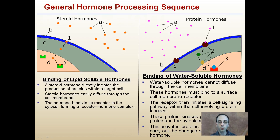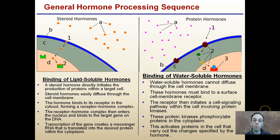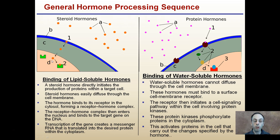Now we have some different examples of different types of hormones. Keep in mind there are two key categories. There are lipid-soluble hormones, or steroid hormones. The key part is these are able to go through the phospholipid bilayer and enter the inner part of the cell. They can directly initiate the production of proteins within a target cell because they easily diffuse across that cellular membrane. The hormone binds to a receptor in the cytosol, forming a receptor-hormone complex, which then enters the nucleus and binds to the target gene of the DNA. Transcription of the gene creates messenger RNA that is translated to the desired protein within the cytoplasm.